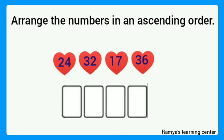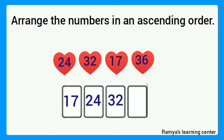Next one. The given numbers are 24, 32, 17, and 36. Arrange these numbers in an ascending order. Which is the smallest number here? It is 17. Then the next higher number is 24. Next higher number is 32, and the biggest number is 36.